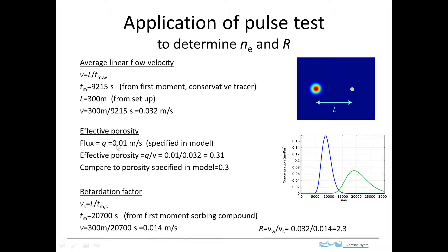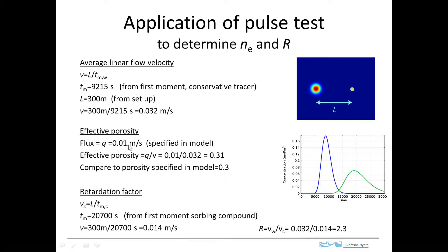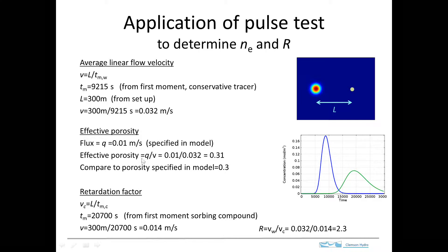So the effective porosity is the ratio of the flux to the velocity. So flux in the model, we just specified that as 0.01 meters per second. In the field, we could determine that using measurements of the gradient and the hydraulic conductivity. So we take the ratio,